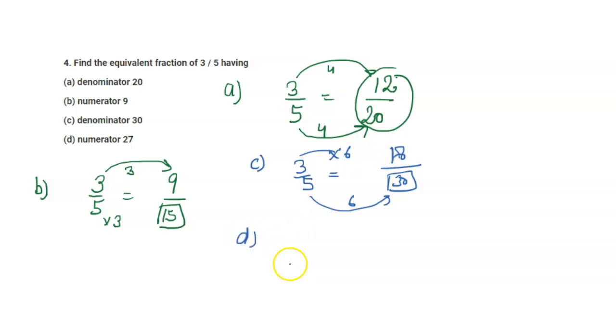Next is part D, where the numerator is 27. So 3/5 equals 27 over what denominator? 3 times 9 is 27, so 5 times 9 is 45. The fraction is 27/45.